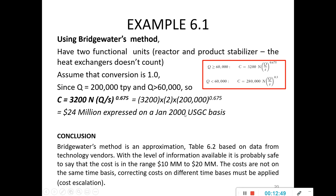In conclusion, the Bridgewater method is an approximation, while Table 6.2 is based on data from technology vendors, making it more accurate. With the level of information available, it is probably safe to say the cost is in the range of 10 to 20 million. However, the costs are not on the same time basis — one is year 2000 and the other is year 2006 — so correcting costs for different time bases must be applied. We will cover cost escalation later.